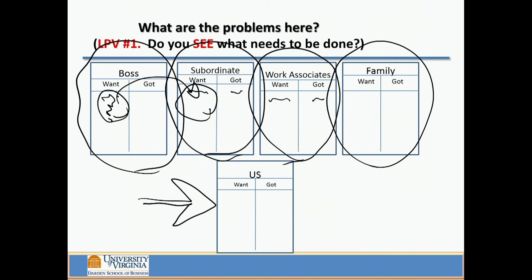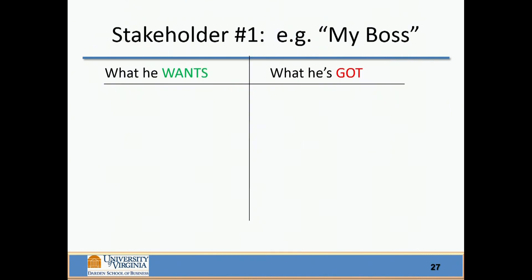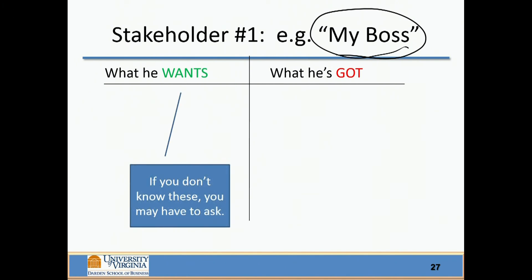Can you decide what the key stakeholders want compared with what they've got? If we zoom in on one of those T-account sheets and think about — could I identify what, in this case we'll say the boss, but it might be anyone we've described — what do they want and what have they got? And if you don't know, you may have to ask them. Have an interview and say, what do you want in this situation? What is it that you want that you're not getting? As straightforward as that. And this works in relationships as well — not just in our corporate relationships, but also in our personal relationships.